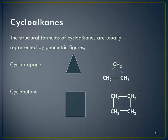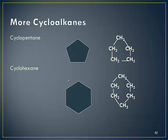When we look at structural formulas for cycloalkanes, they're usually represented by geometric figures, and at the points of each geometric figure you can imagine there to be a carbon. If nothing else is drawn in around those points, we know that the remaining bonds are taken up by hydrogens. So a carbon with two bonds to other carbons must have two hydrogens coming off. This would be cyclopropane — a three-carbon chain in a cyclic arrangement. The second example is cyclobutane, a four-carbon chain in a continuous loop. Then cyclopentane with five carbons, and cyclohexane with six carbons.